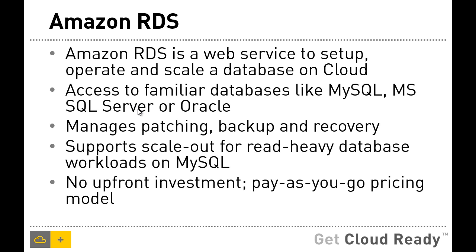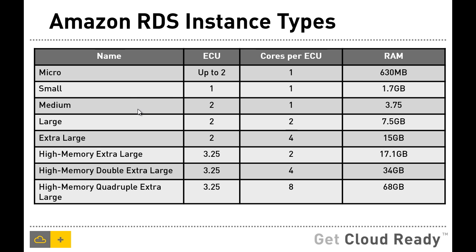Like most Amazon services, RDS has no upfront investment. You can start with a pay-as-you-go model and keep adding more database resources as you go. Like EC2, RDS has multiple instance types ranging from micro to high memory quadruple extra large. Each instance type comes with a different configuration and price point, so depending on the workload you are migrating to the cloud, you can choose the instance type that ensures optimal database performance.